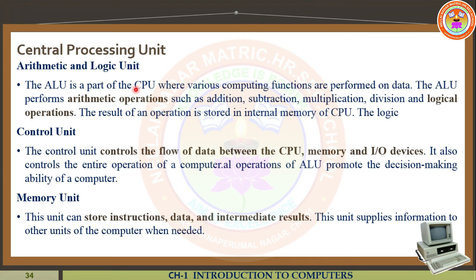The next thing is the control unit. The control unit controls the flow of data between the CPU and memory and input-output devices. This unit especially controls the flow of data — from CPU to memory, and from memory to input-output devices. This is the platform to convey the information from one part to another part. That's why the control unit controls the entire flow of the data process and also controls the entire operation of the computer. The control unit is known as the decision-making ability of the computer.